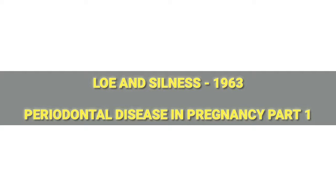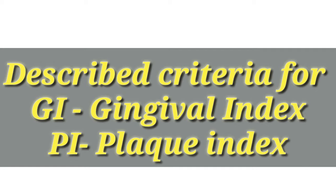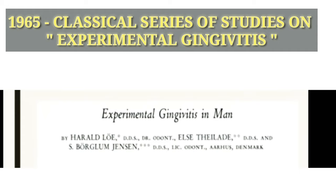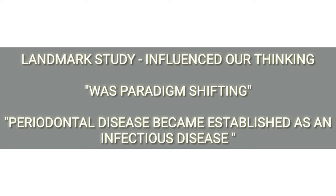We will first see the landmark study on etiology of periodontitis. The most often cited papers in periodontology are those by Harold Lowe and John Silnes, in which they described the criteria for the gingival index and plaque index — cited 4,161 and 4,368 times respectively. After describing these indices in the 1963–64 paper, Lowe and colleagues used these clinical assessments in a classic series of studies on experimental gingivitis, firmly establishing the etiological link between dental plaque and gingivitis in 1965. After this study, periodontal disease became established as an infectious disease.